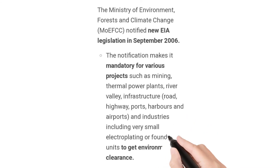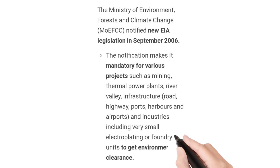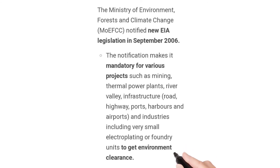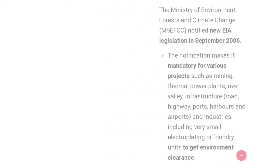Category B projects required environmental clearance from the state government. Category B was further classified into B1 and B2 — Category B1 projects required Environmental Impact Assessment reports, while Category B2 projects were exempted from the EIA process. The 2006 notification was quite popular because after this, projects were categorized in this manner.